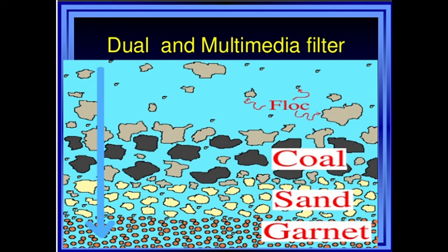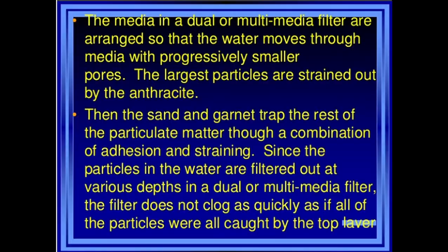The second topic is the dual and multimedia filter. The diagram shows various filter media — anthracite, sand, and garnet — that may be used in a dual and multimedia filter. The media in a dual or multimedia filter are arranged so that the water moves through media with progressively smaller pore size, filtering out larger particles first.